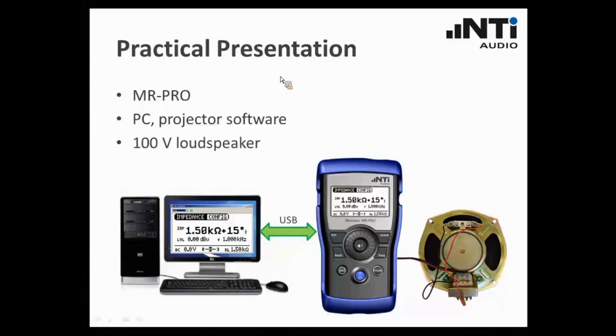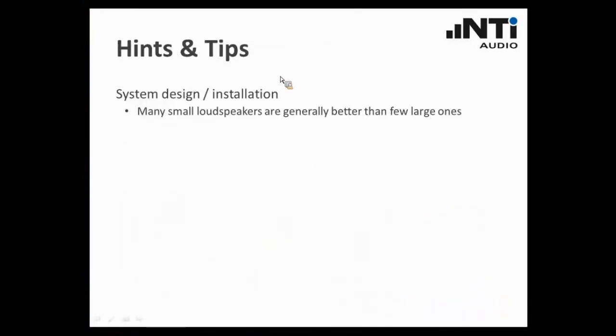I would like to provide you some hints and tips. The first one is when you design or install a system, there is a rule of thumb. Generally, it is recommended to install many small loudspeakers rather than few large ones. The reason is very simple. With a better distribution of small loudspeakers, you usually get a more homogeneous sound field in your venue, instead of having just three or four large and loud loudspeakers. They are more inhomogeneous in the sound field, and that has a negative impact on the speech intelligibility. So realizing a system with a good speech intelligibility would rather require a larger number of small loudspeakers.